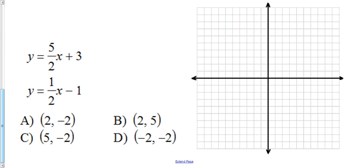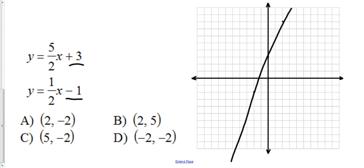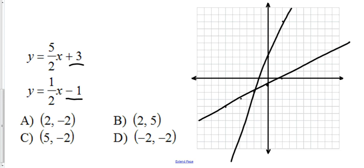Let's try another example. This system is already in slope-intercept form. The first equation has a y-intercept of 3 and a slope of 5 over 2. The second equation has a y-intercept of negative 1 and a slope of 1 over 2. Graphing both lines, the point of intersection is at approximately negative 2, negative 2.